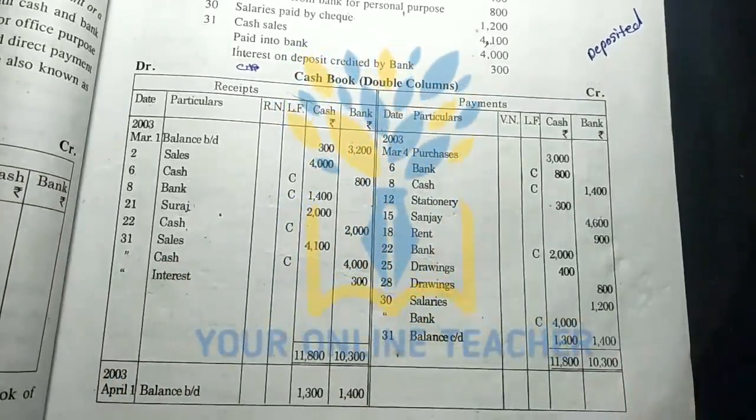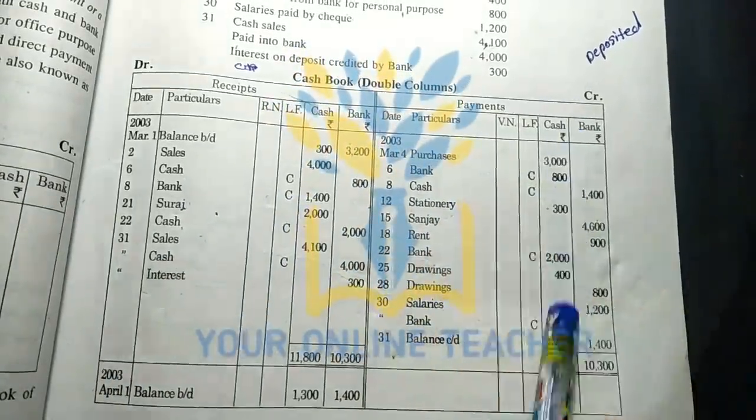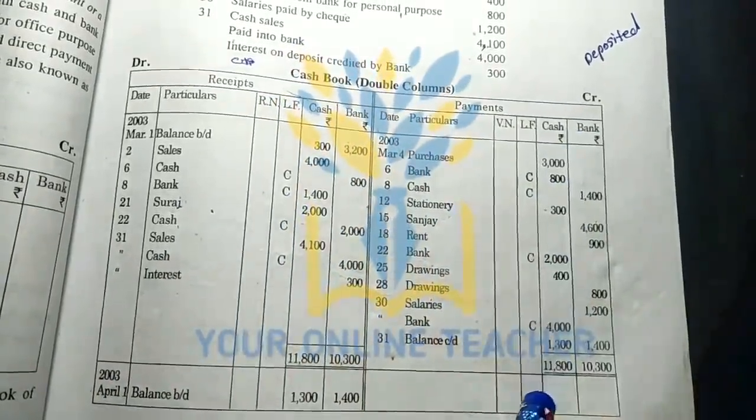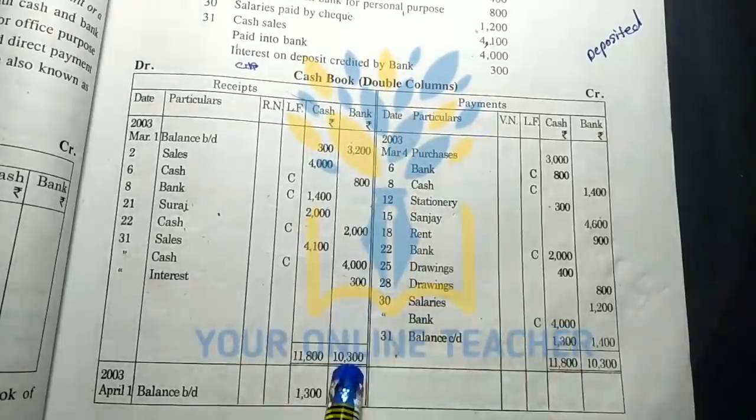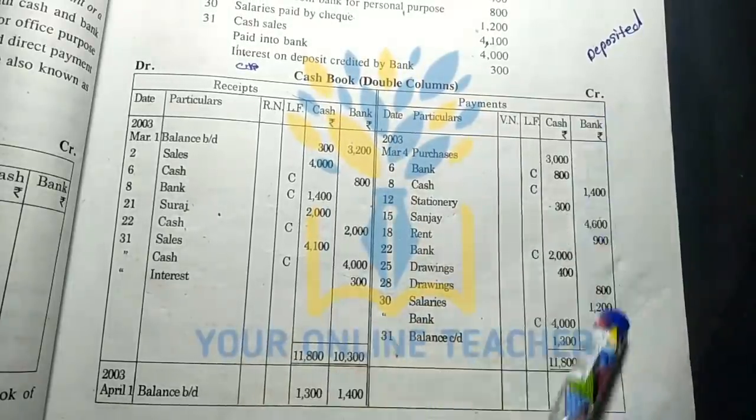What is the entry? There is a total of cash and a bank.